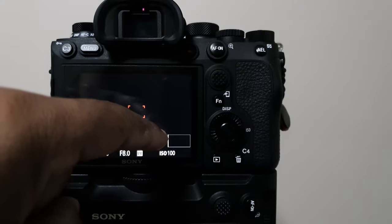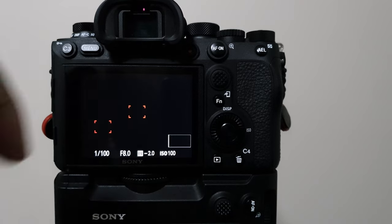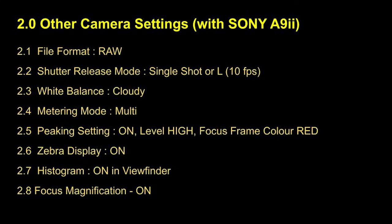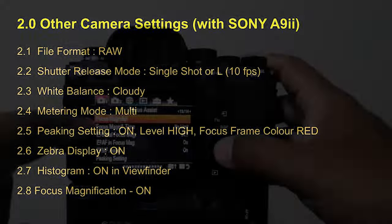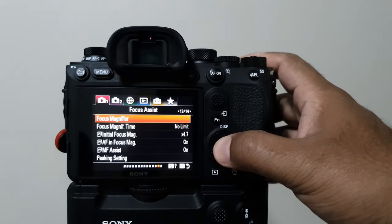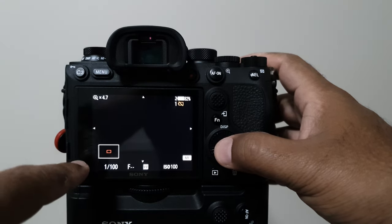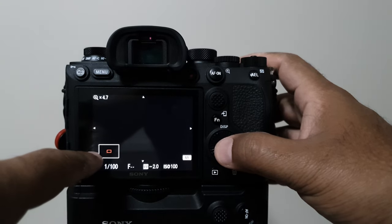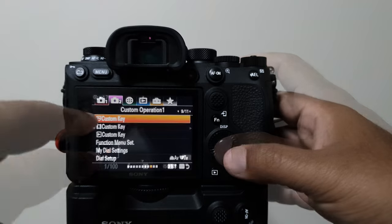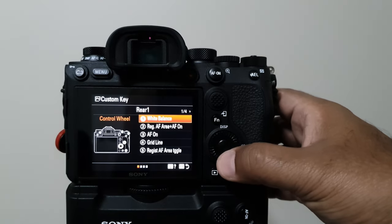Set histogram on and try to get an idea about your exposure curve. Set focus magnification on and assign it to one of the control wheel buttons — it allows you to tap in and get very precise focus peaking in macro photography.